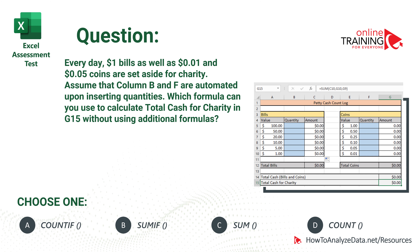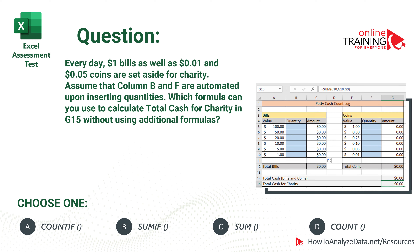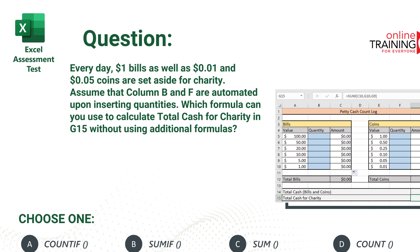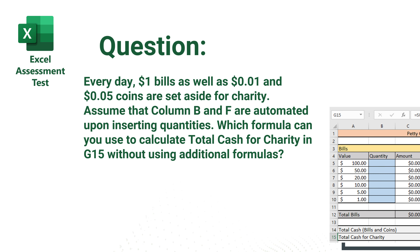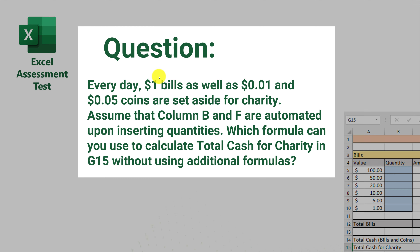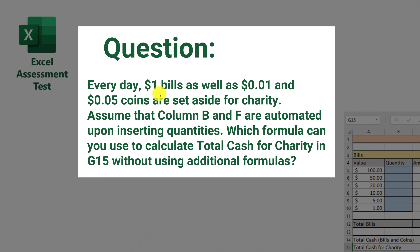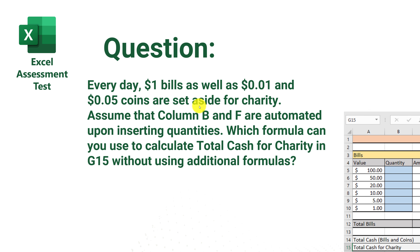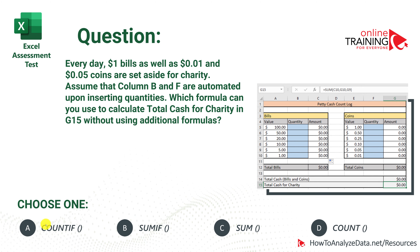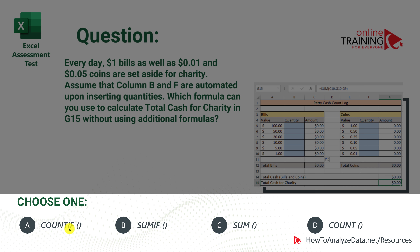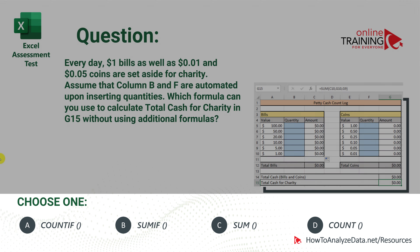Now let's look at a very tricky advanced Excel assessment test question, frequently used in tests for accountants, bookkeepers, auditors, and controllers. Every day, one-dollar bills as well as one-cent and five-cent coins are set aside for charity. Assume that columns B and F are automated upon inserting quantities. Which formula can you use to calculate total cash for charity in cell G15 without adding additional formulas? The four choices are: COUNTIF, SUMIF, SUM, and COUNT. Which one is right?